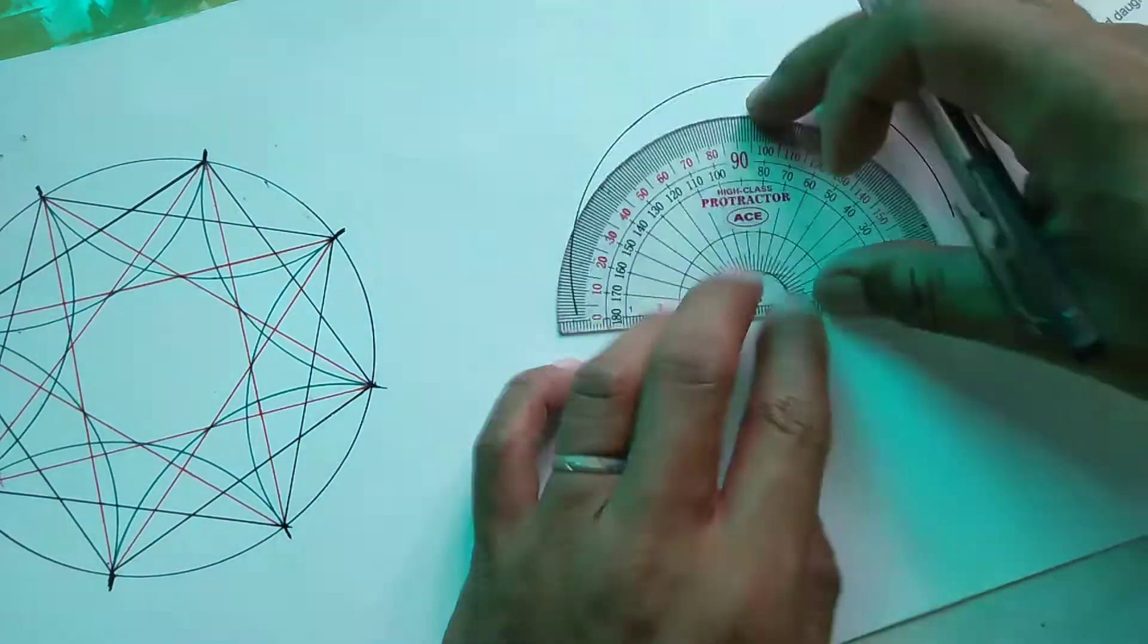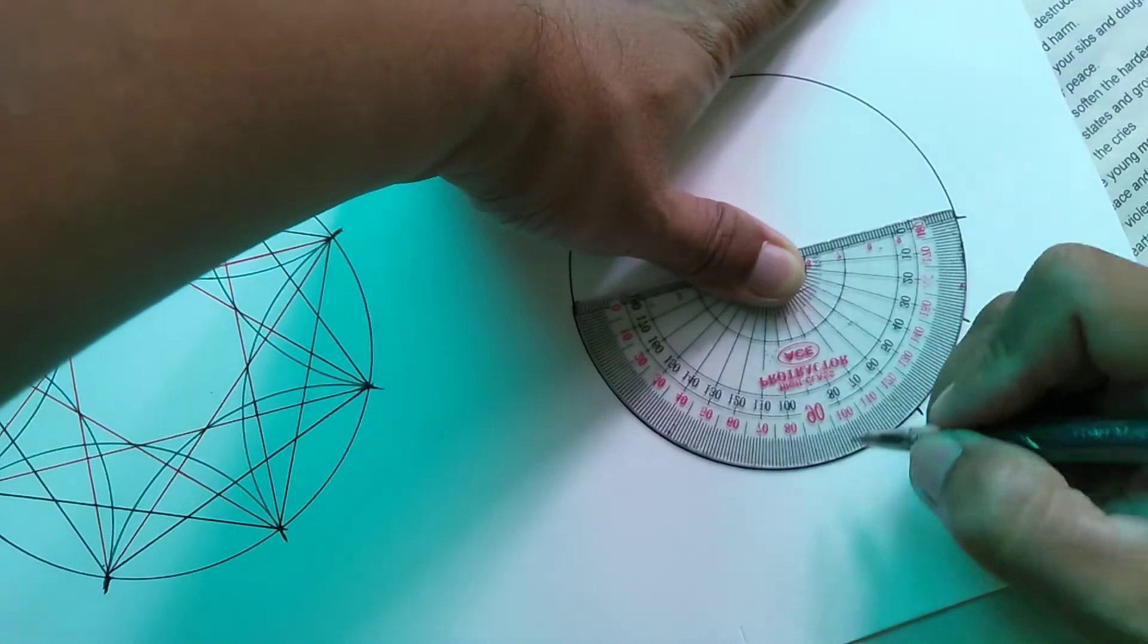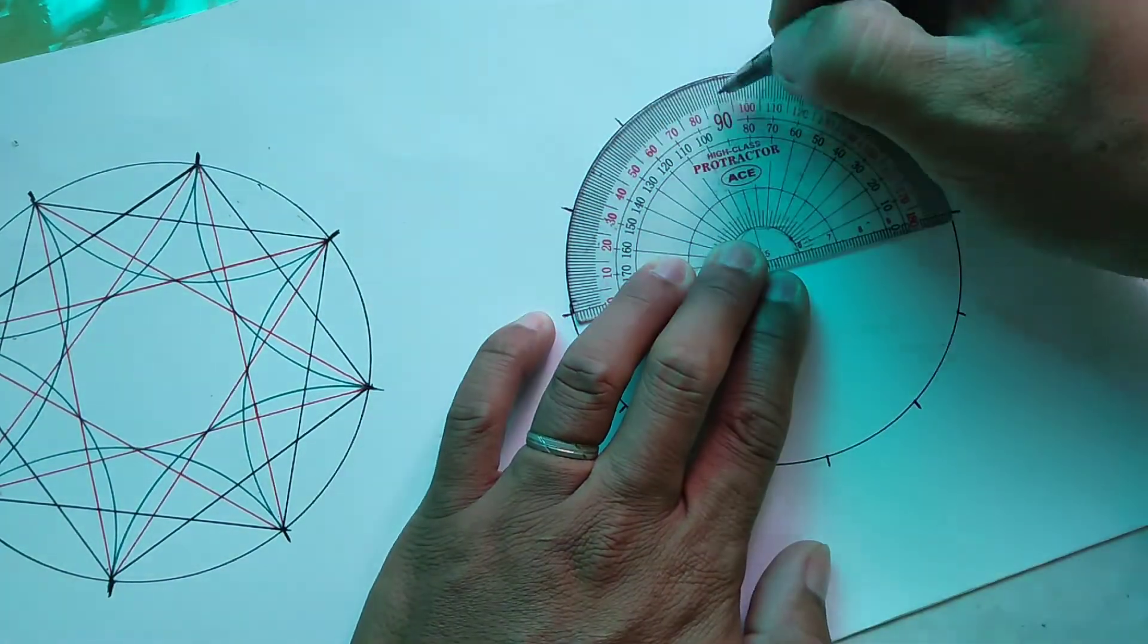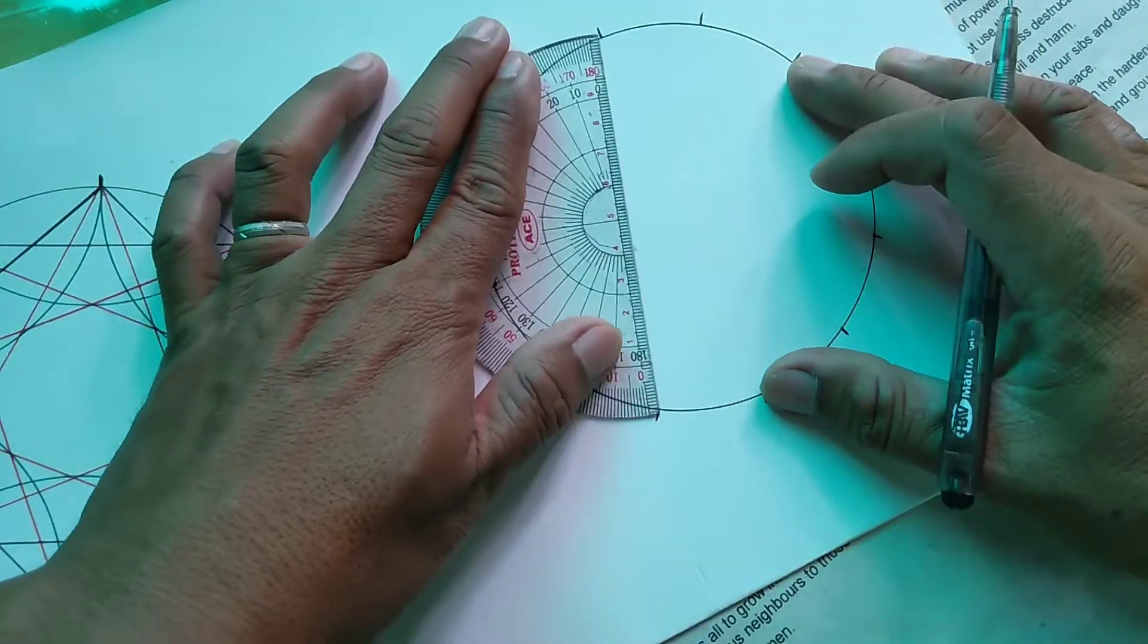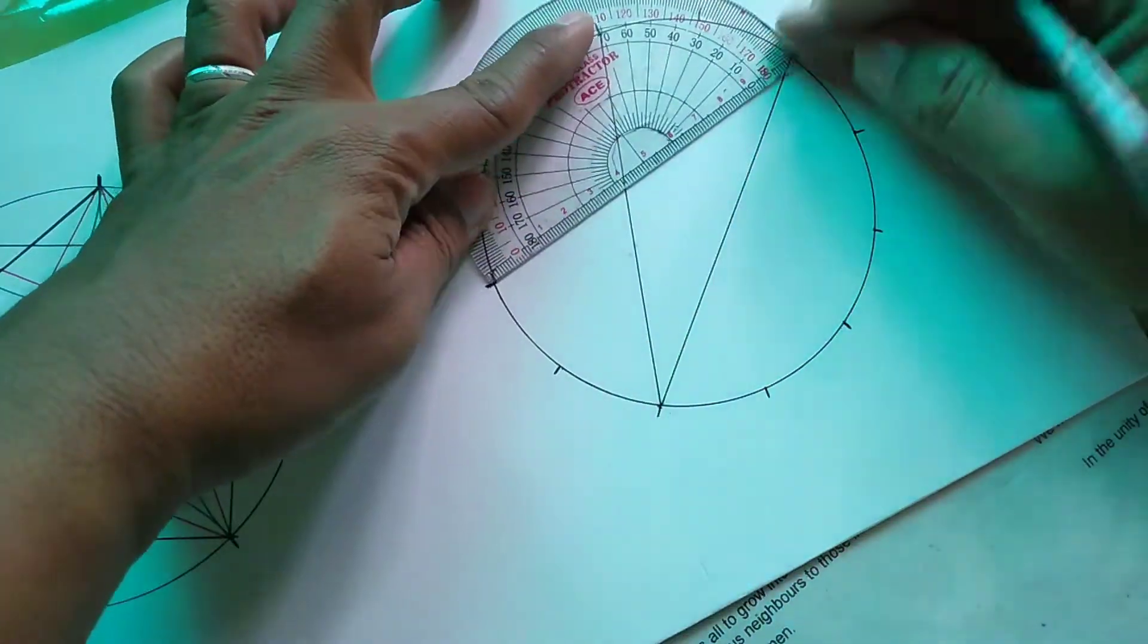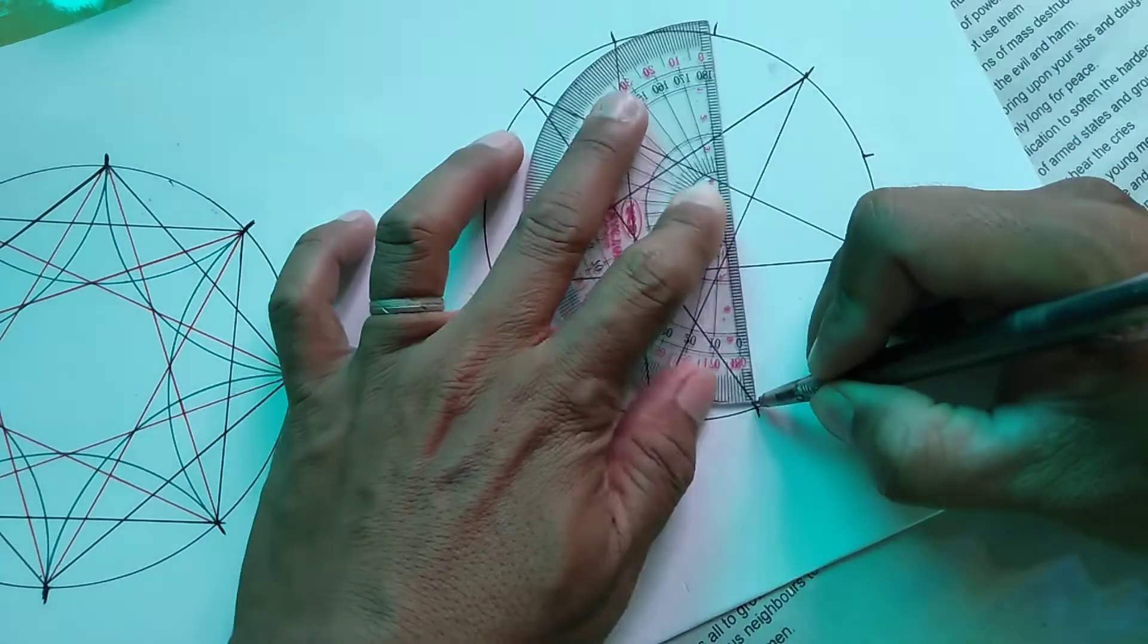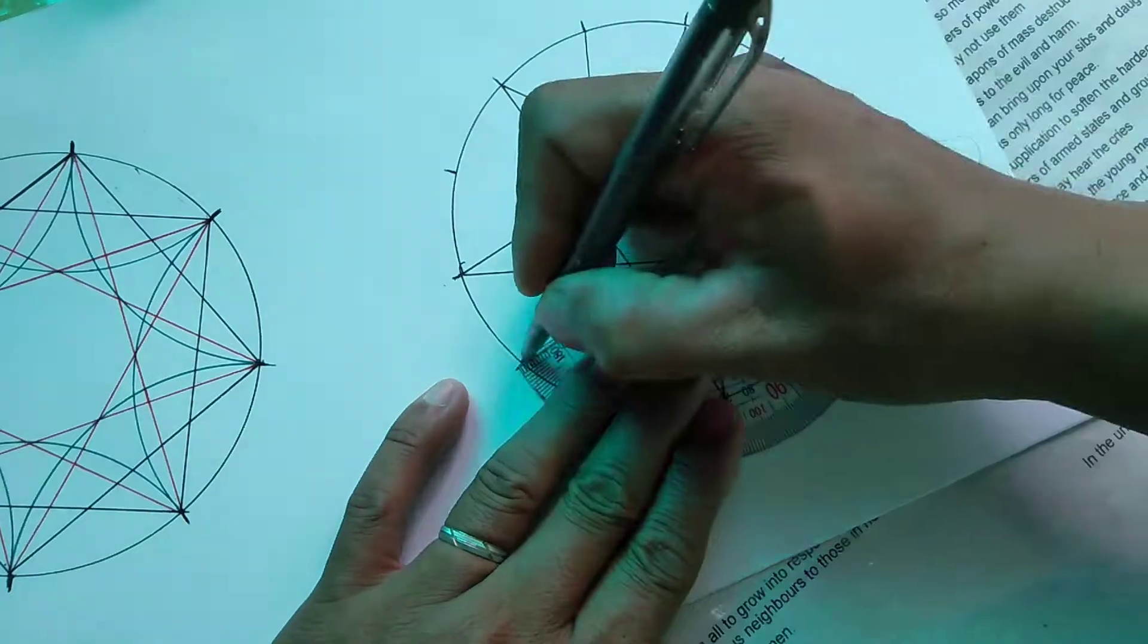The second one now is 30 degrees. The first one was 45 degrees. I marked our circle at every 30 degrees. Then we're going to have another pattern. It depends on you what kind of pattern you want to make. A repetitive line that you just do over and over, and you're going to be amused with the final product.